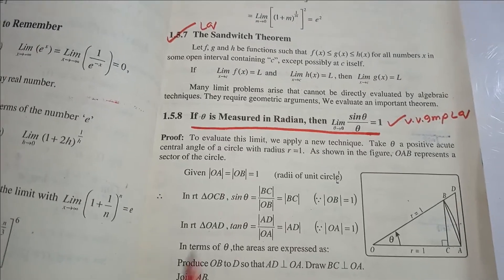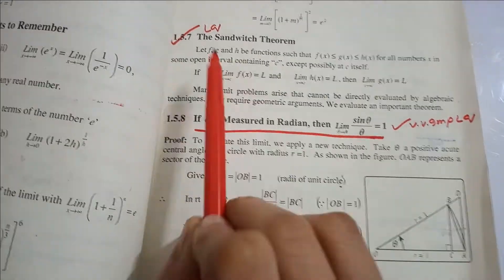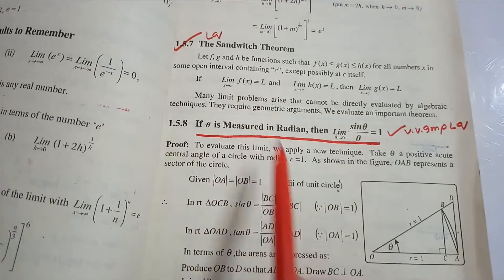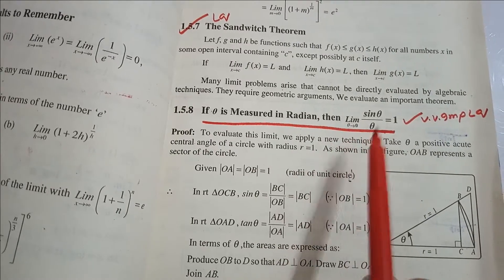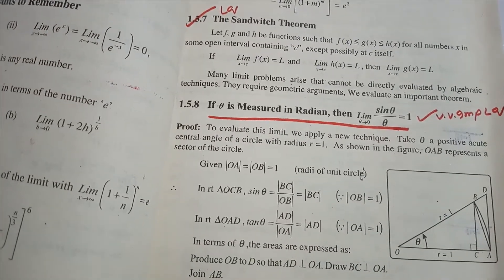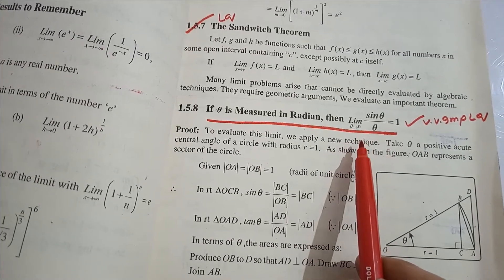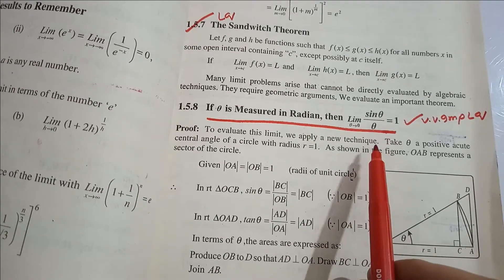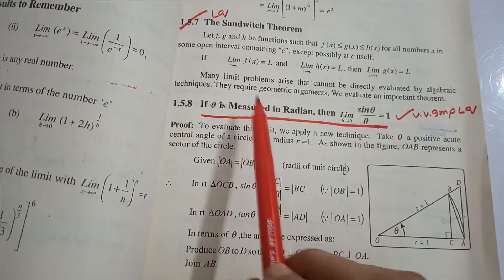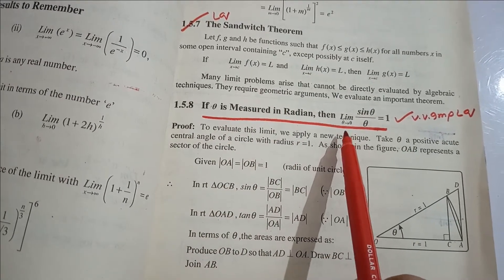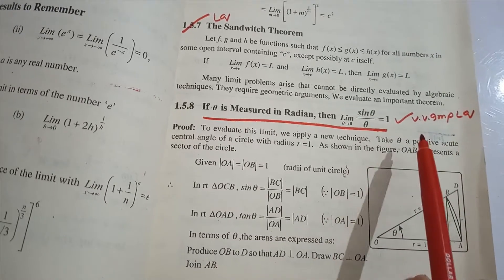Now, the Sandwich Theorem and its proof are very important. We will use it to solve the proof: the limit as θ approaches 0 of sin θ over θ equals 1. This proof is very important for papers, and we will solve it in this video lecture.